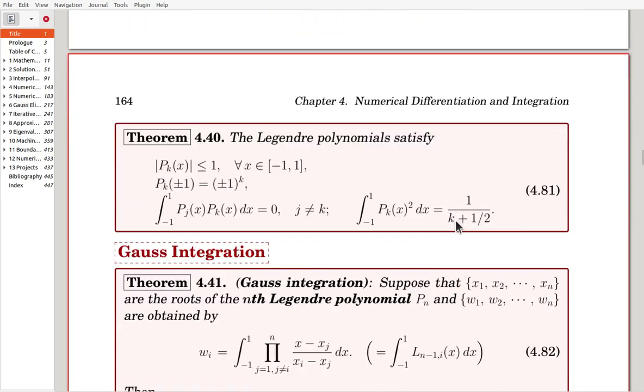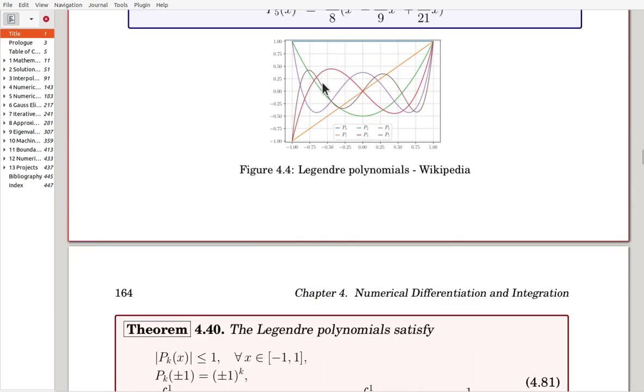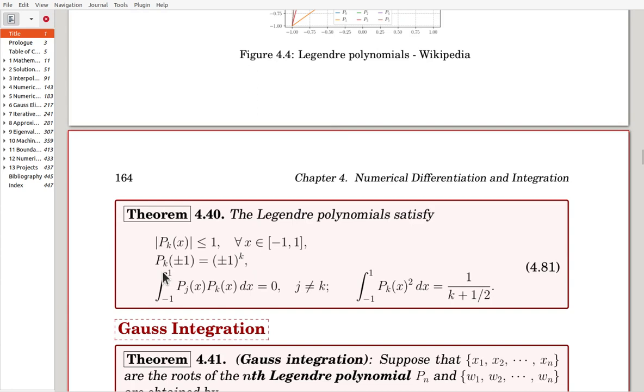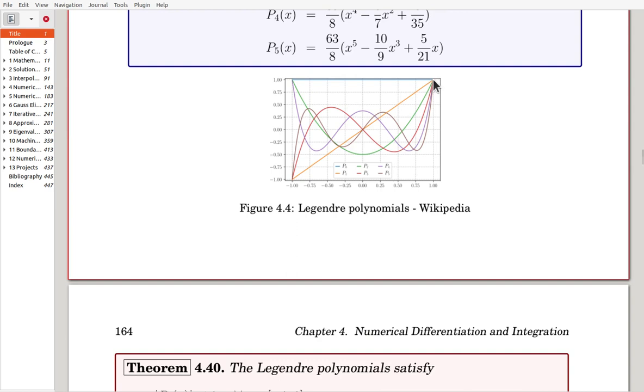Here we have a theorem. Legendre Polynomials satisfy these properties. The Pk in modulus is bounded by 1. As you can see over there, always between minus 1 to 1. And Pk at 1, the value is always 1 for every k. But at minus 1, Pk has minus 1 to the k. So here, at 1, the value is 1, the height is 1. But at minus 1, here, the P0 starts from here, P1 starts from here, P2 starts from here, P3 starts from here, and so on.